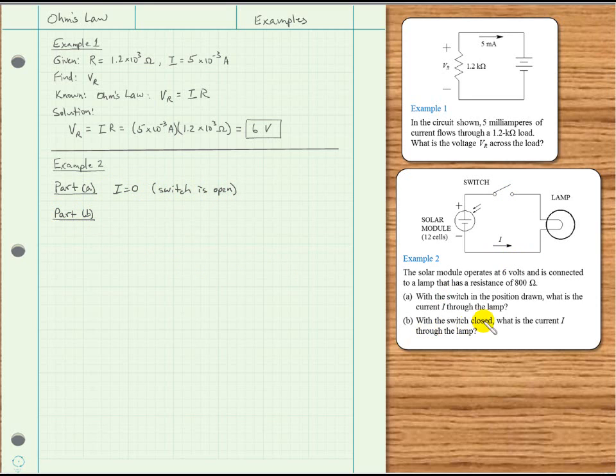So for part B, with the switch closed, so if we close the switch, which I'll go ahead and just draw it closed then. If we close the switch, now we have a complete circuit to flow from the negative terminal of the source through the load, where electrical energy gets changed into light energy, and then the electrons have a path to flow back to the positive terminal of the energy source.